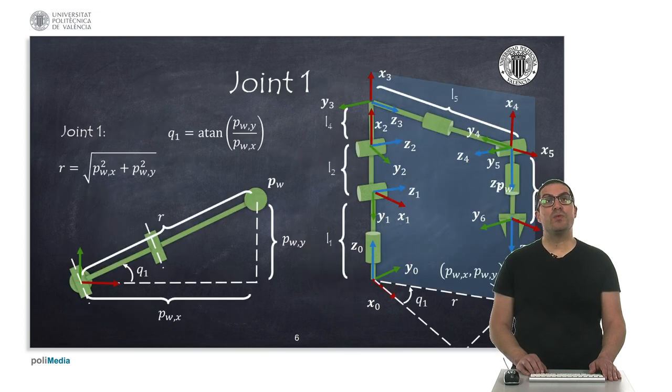The first robot joint will allow us to point to the desired direction and therefore, if we project the wrist point onto the xy plane, then we can get the required value for joint 1 as you can see. It's just simply an arctangent of the y coordinate and the x coordinate.